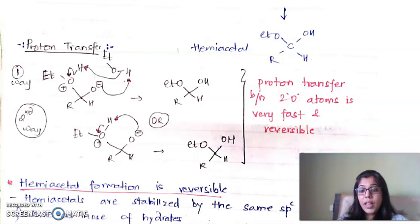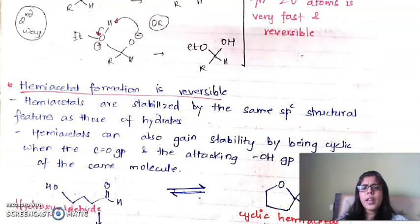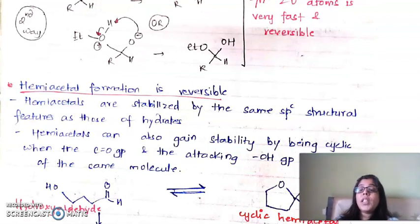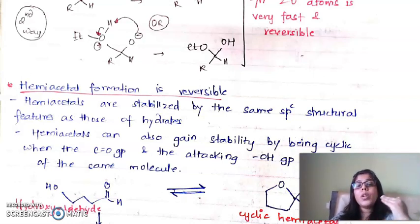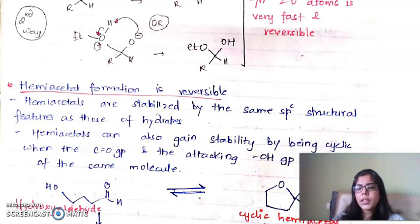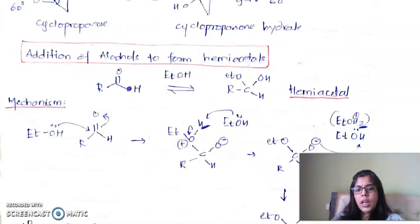An important statement: hemiacetal formation is reversible — just as we saw cyanohydrin formation was also reversible. This means the hemiacetal can get converted back to its starting materials. Hemiacetals can also gain stability in the form of a cyclic structure.